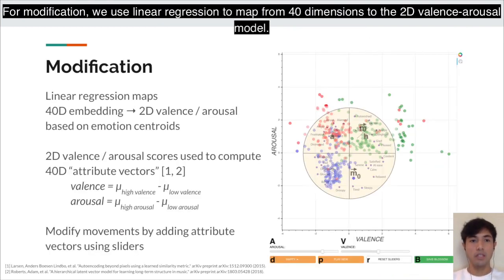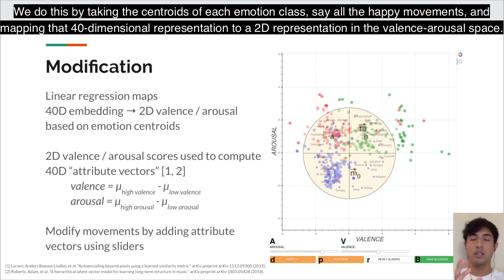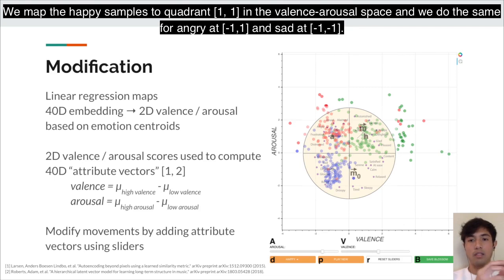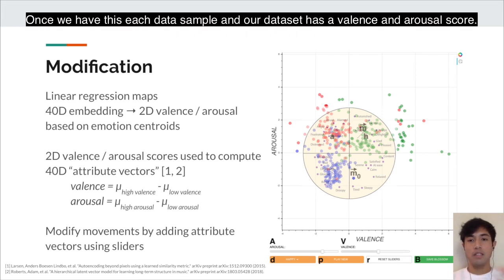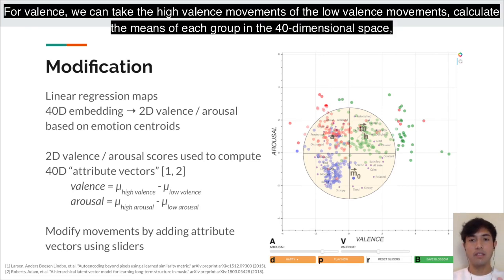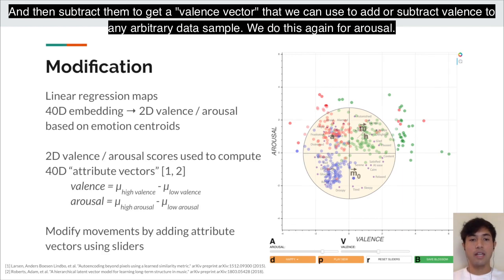To achieve modification, we use linear regression to map from 40 dimensions to the 2D valence-arousal model. We do this by taking the centroids of each emotion cloud — for example, all happy movements — and mapping that 40-dimensional representation to a 2D valence-arousal position: happy maps to (1,1), angry to (-1,1), and sad to approximately (-1,-1). Once each data sample has a valence and arousal score, we can take high- and low-valence movements, calculate the means of each group in 40-dimensional space, and subtract them to get a valence vector that can add or subtract valence from any arbitrary sample. We do the same for arousal.